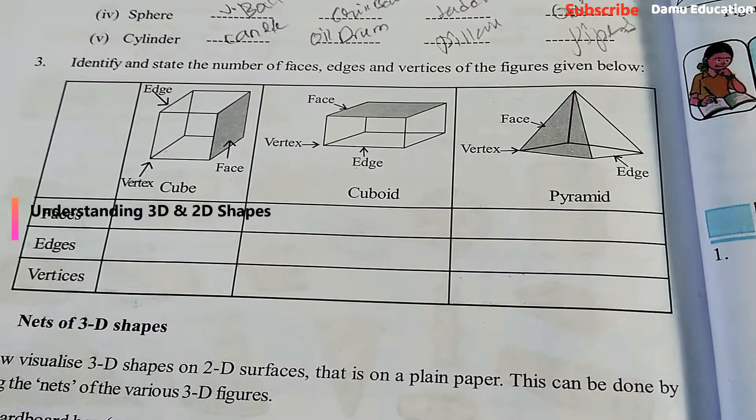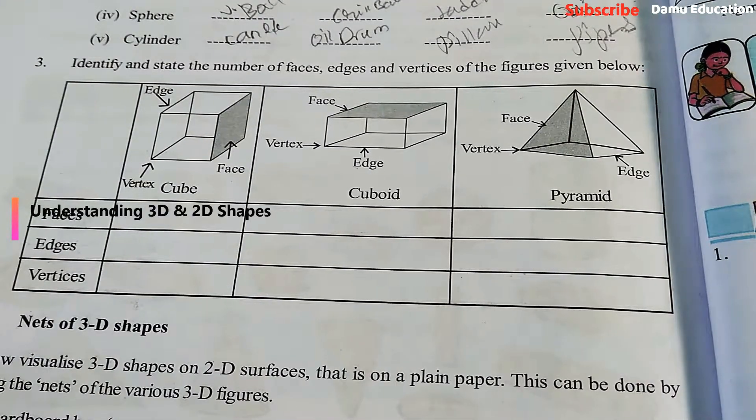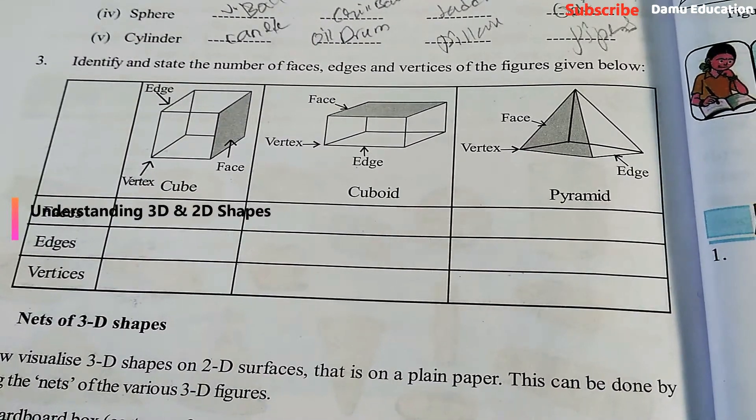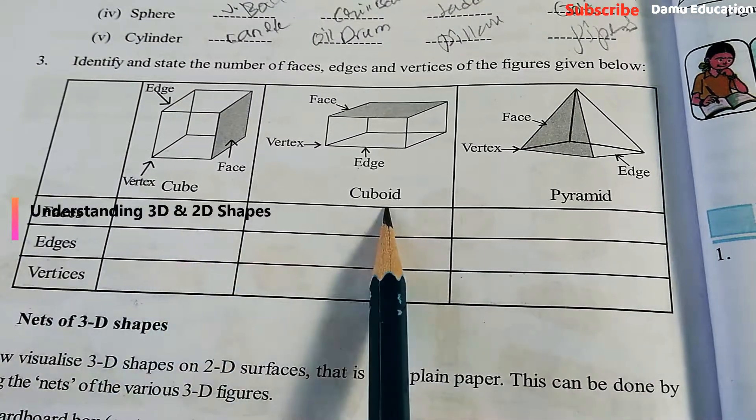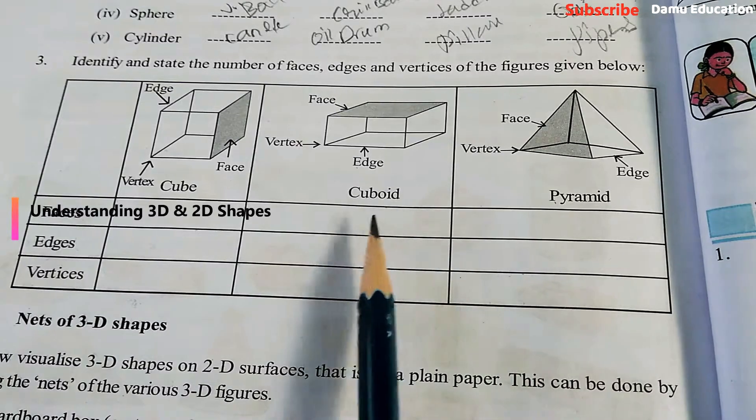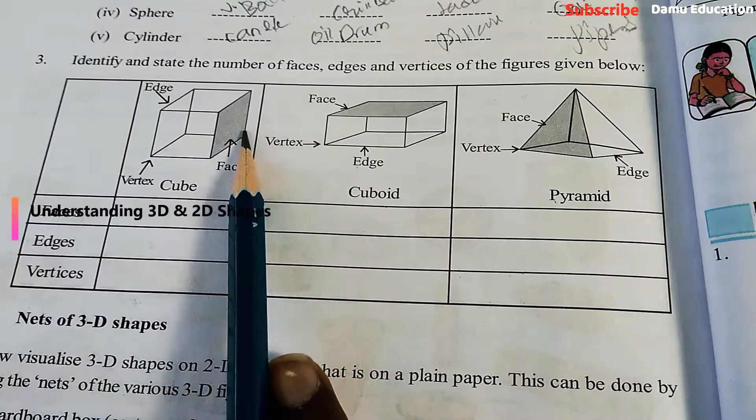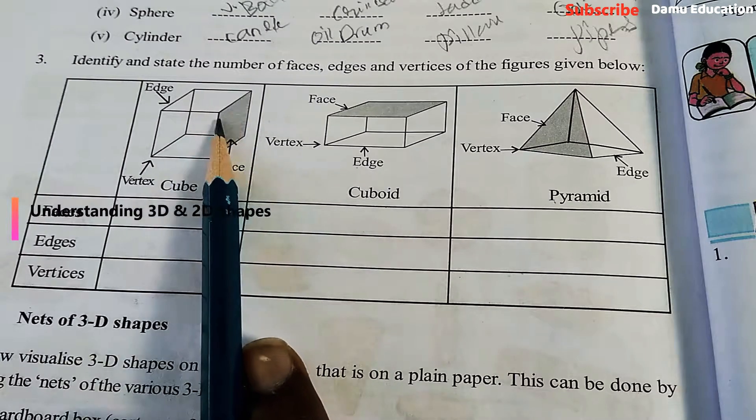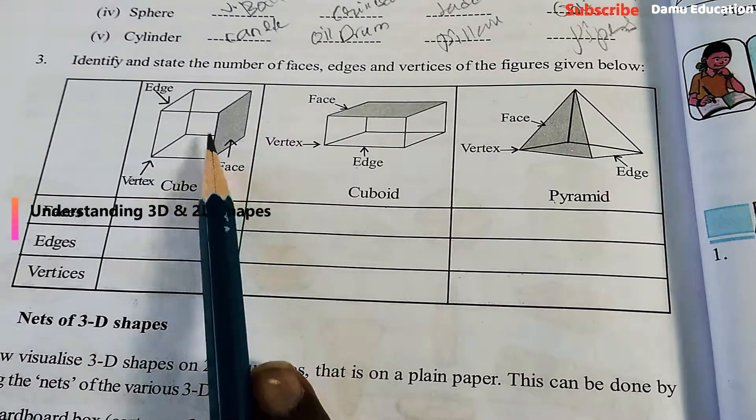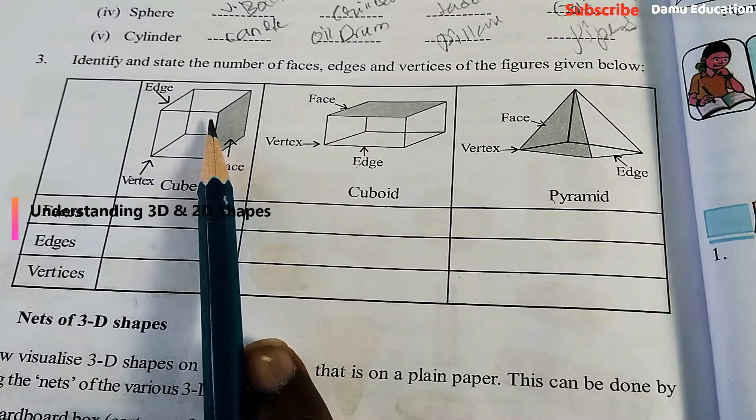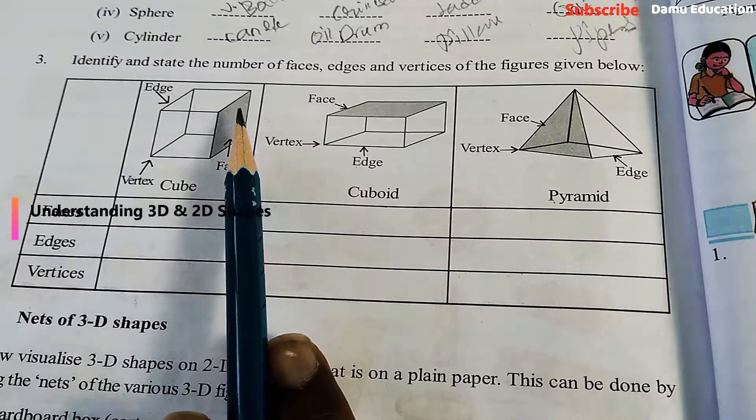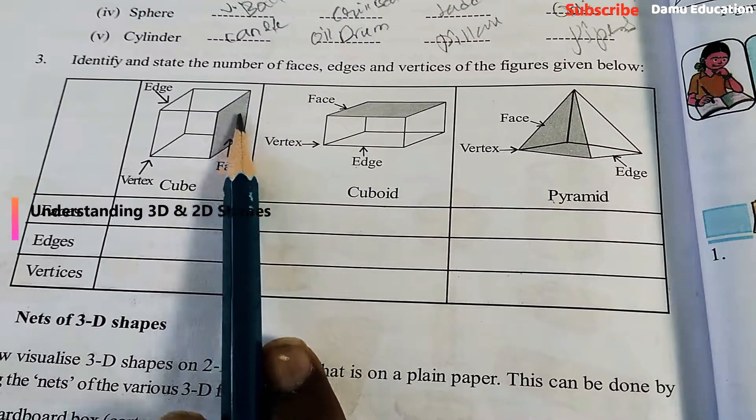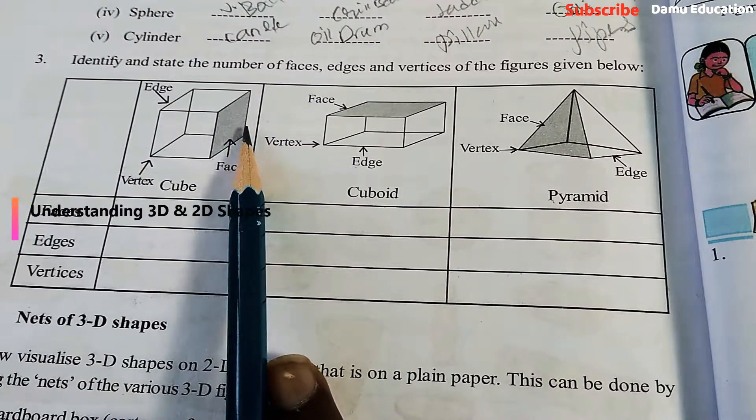What is our third question? Identify and state the number of faces, edges, and vertices of the figures given below. Here they are given cube, cuboid, and pyramid. What are faces? Faces are always two-dimensional surfaces that join with any four sides or any three sides of any shape. Minimum three sides should be there. That is face - a two-dimensional enclosed surface.